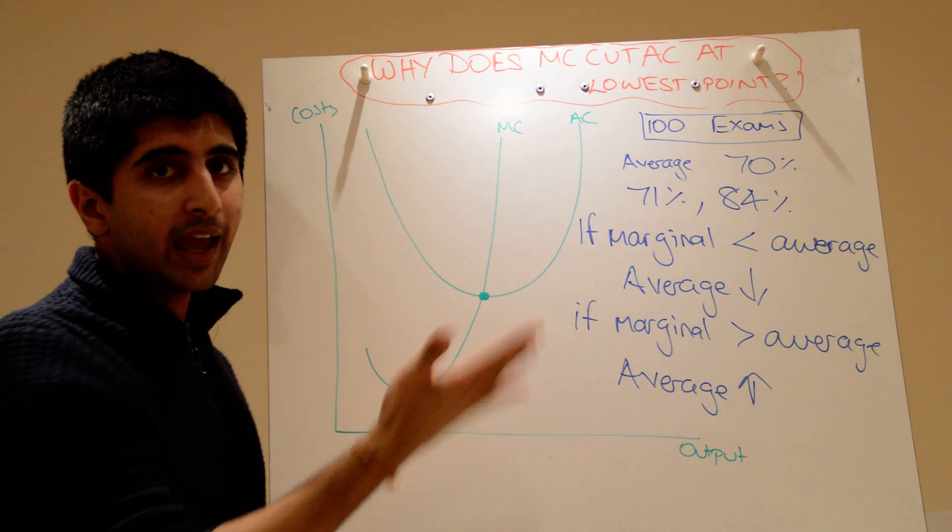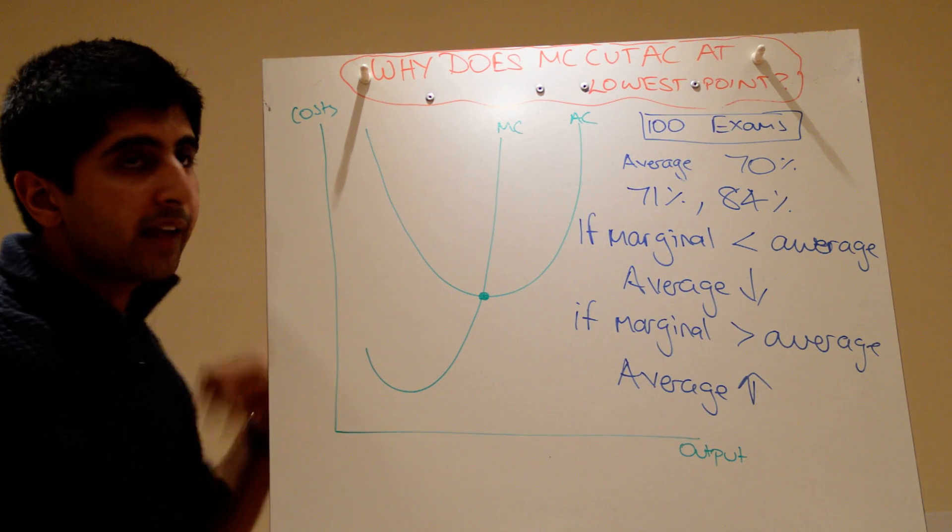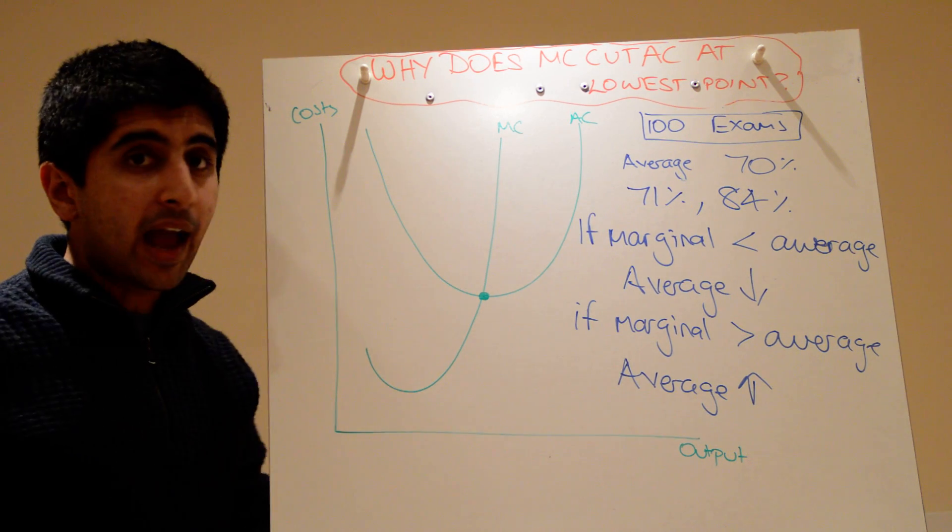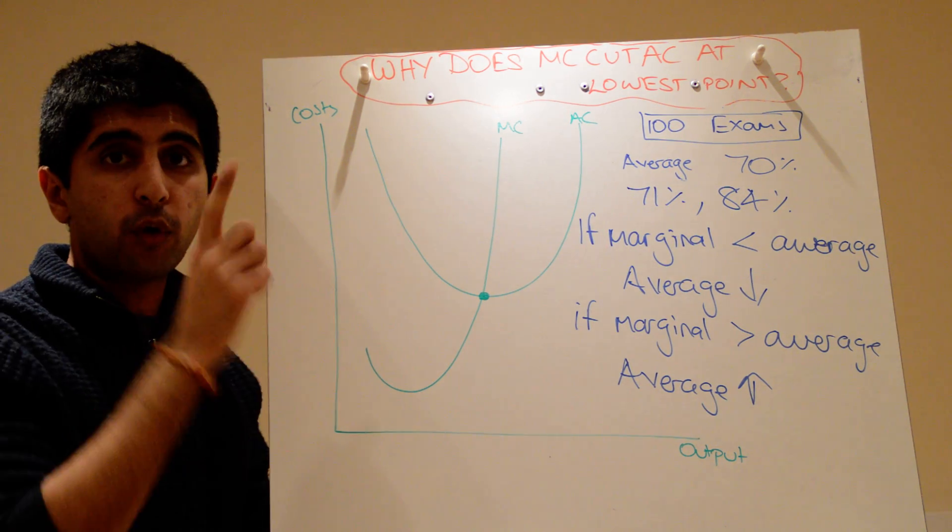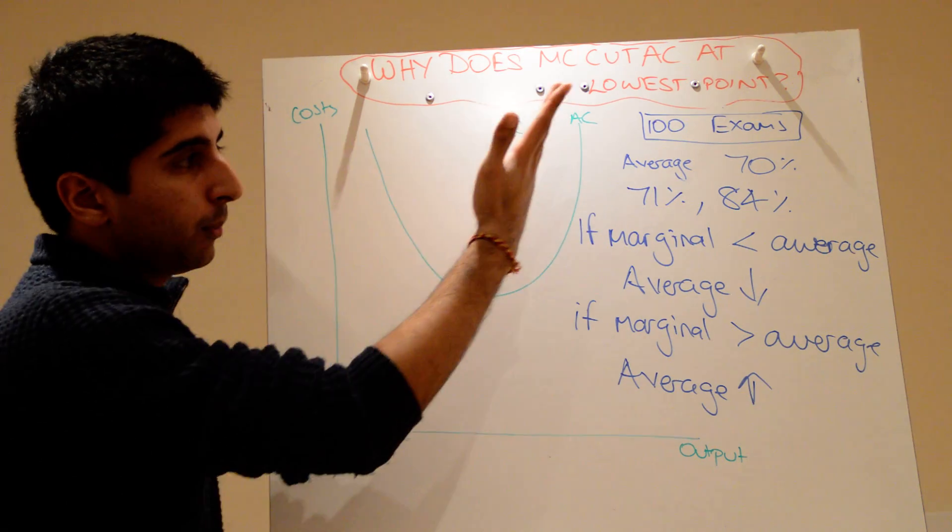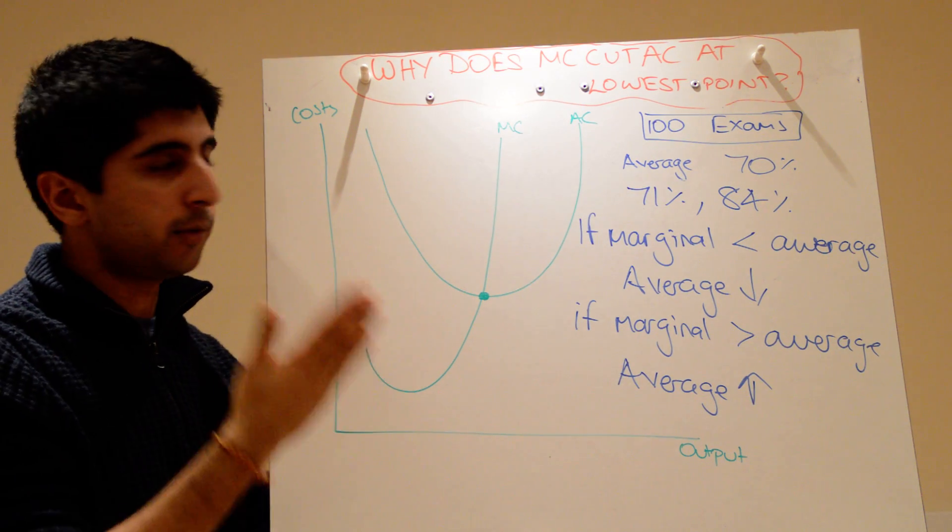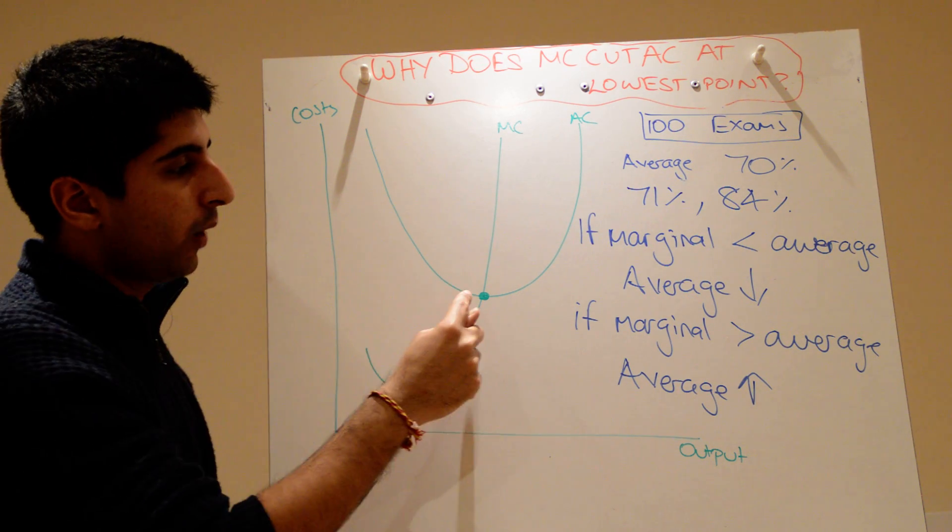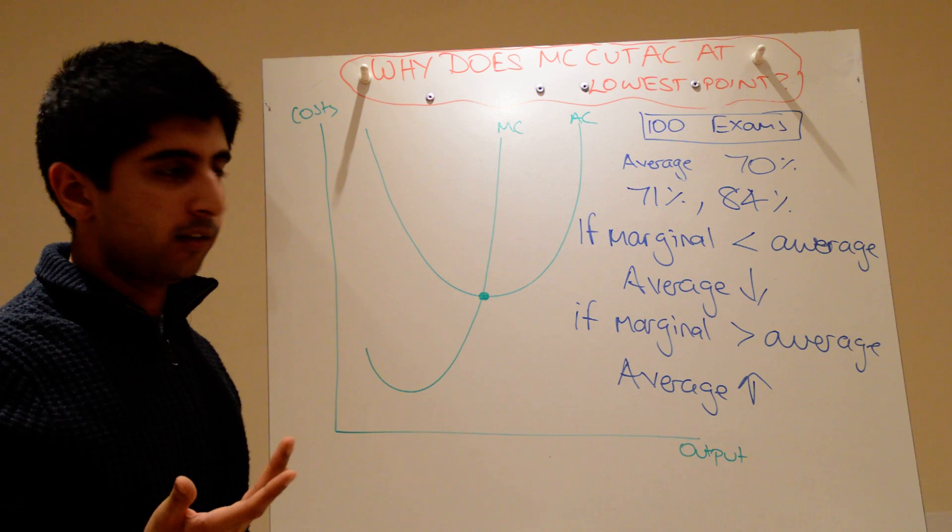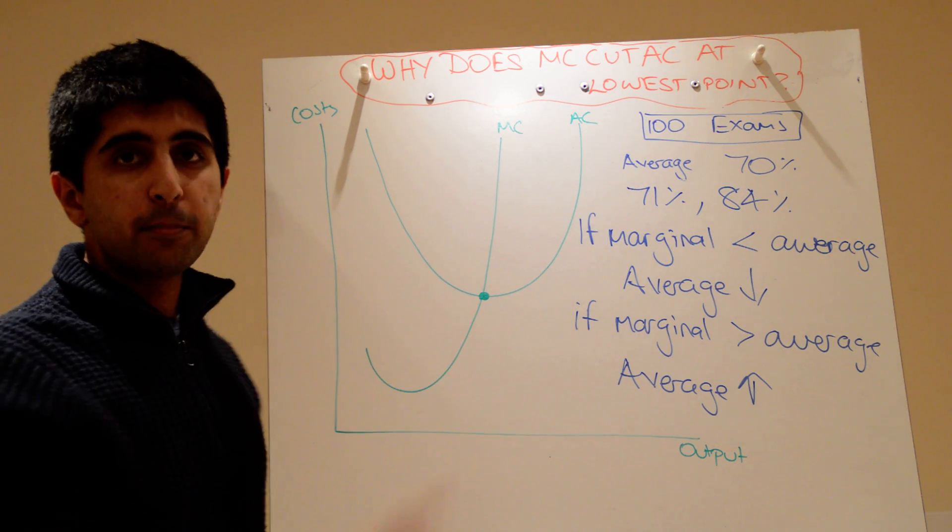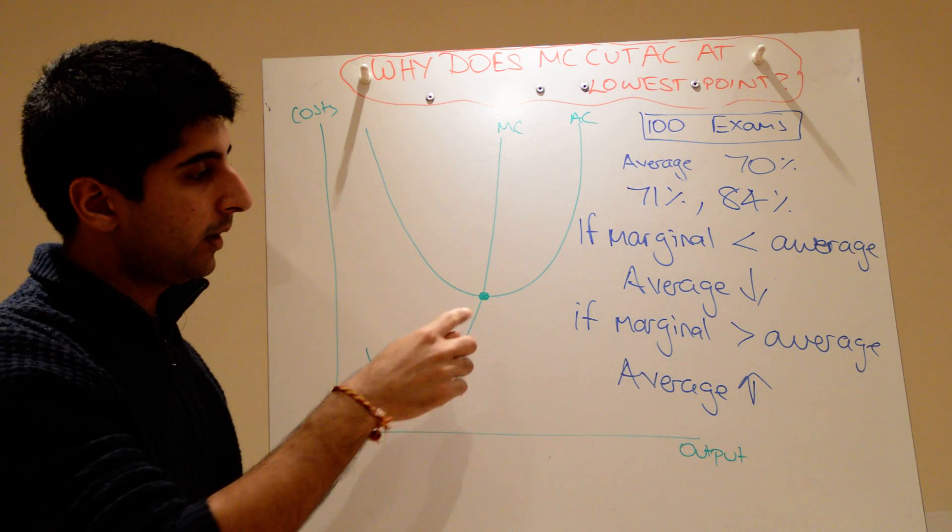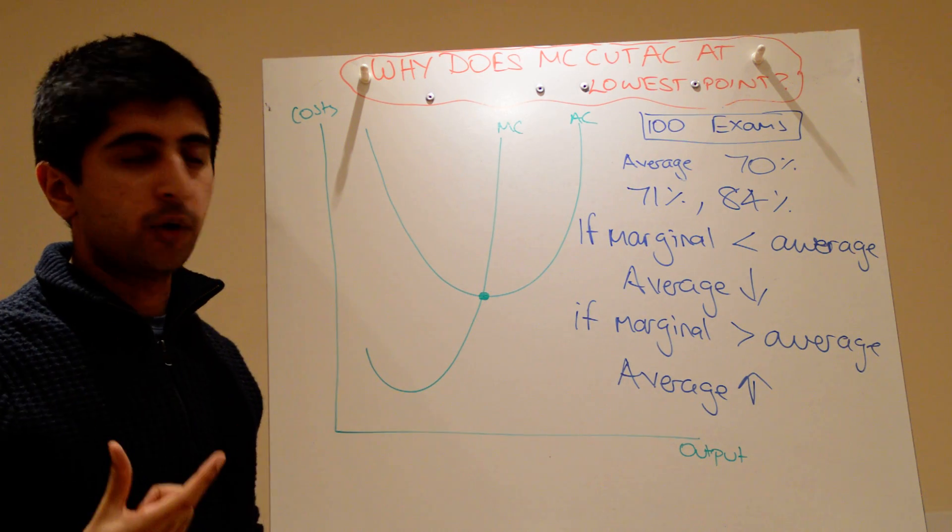Well, given that those two are the case, the only place the marginal cost curve can cut the average cost curve is where the average cost curve is not rising, it's not sloping upwards, or sloping downwards. It can't be rising or falling. And the only place that happens is when it's flat. Well, there's no gradient to it. And that point is at the very bottom of the curve. So the marginal cost curve, for it to be equal to it, must cut at the lowest point.